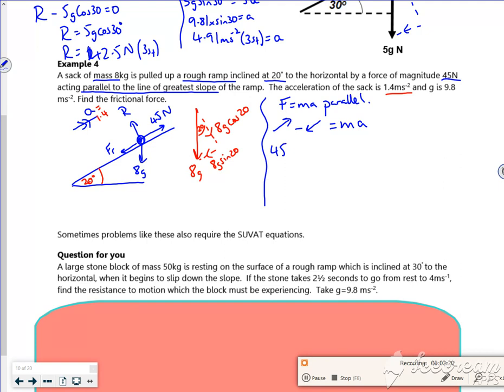So the force in the direction of travel is the 45 Newtons. The forces acting against it - now there's two: there's 8g sine 20, and there's also the friction as well. And that's equal to the mass of 8kg times by an acceleration of 1.4.